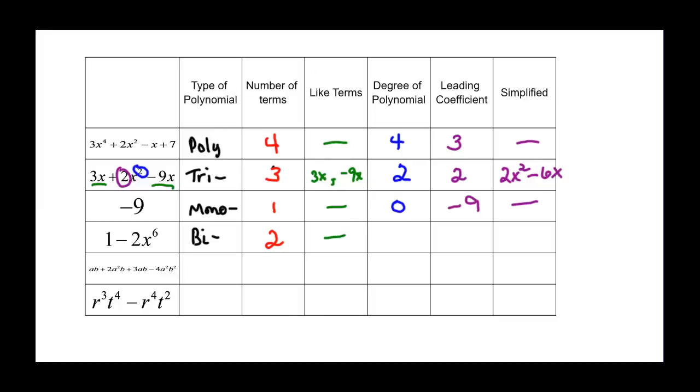Do we have any like terms? No. Degree of the polynomial - the only one I see is this six, so that would be the degree of my polynomial. The coefficient on that term, including the sign in front of it, will be my leading coefficient, so that's negative two. Since I didn't have any like terms, I can't simplify.